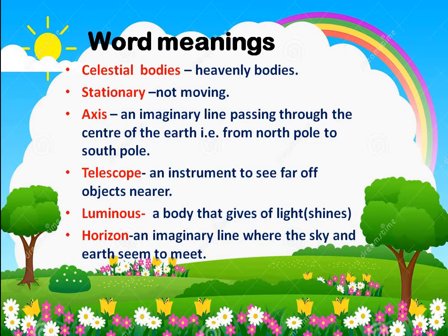With this we end the first part of our chapter: observing the sky. Now let me tell you the word meanings of the words I have used. Celestial bodies means heavenly bodies — the bodies which are present in space or in the sky. Stationary means not moving. Axis means an imaginary line passing through the center of the earth, from north pole to south pole. Telescope is a scientific instrument to see distant objects nearer. Luminous means a body which gives out light of its own. Horizon is an imaginary line where the sky and the earth seem to meet.